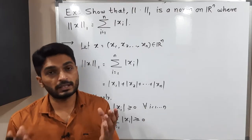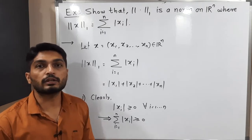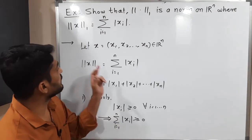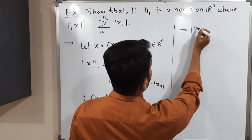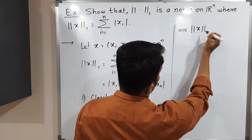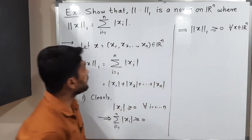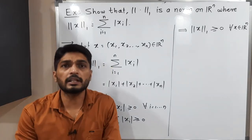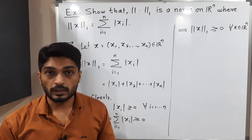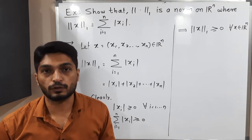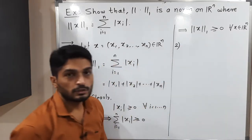Since all terms are greater than or equal to zero, their sum ∑|xᵢ| is also greater than or equal to zero, which is nothing but the definition of norm₁(x). Therefore, norm₁(x) ≥ 0 for all x ∈ ℝⁿ. In this way we proved that norm 1 satisfies the first condition.